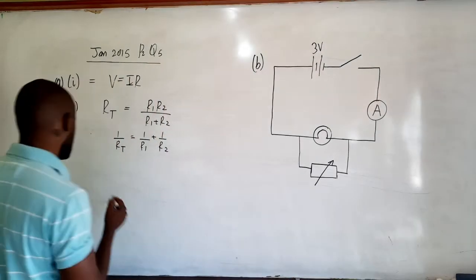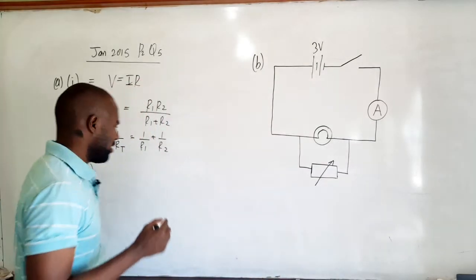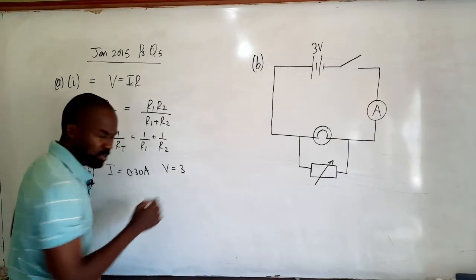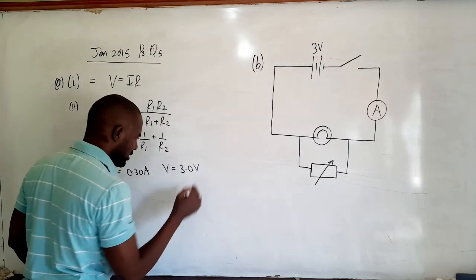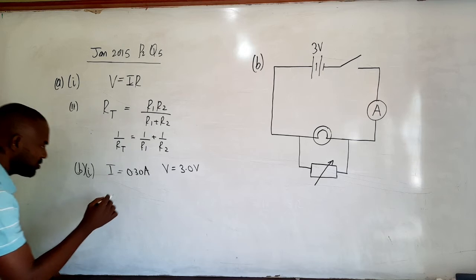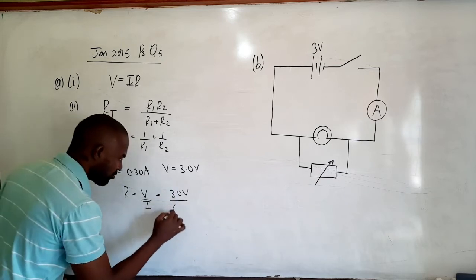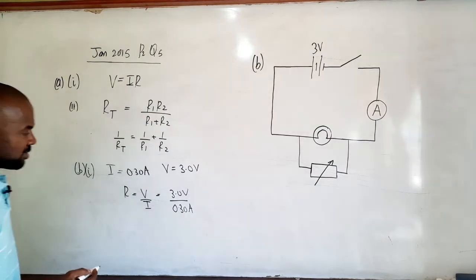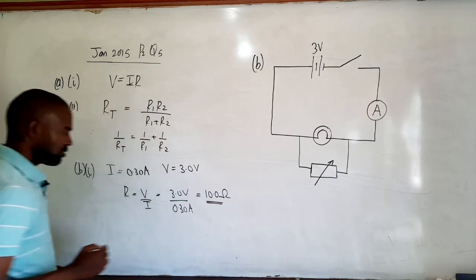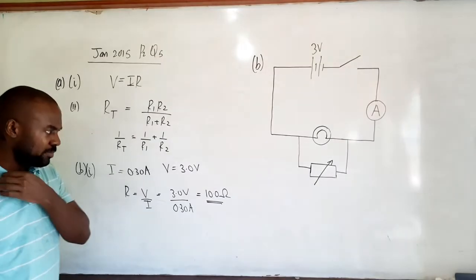Part B1 asks: what is the resistance of the bulb? For the bulb we have current I equals 0.30 amperes and PD V equals 3.0 volts. Using the transposed formula, R equals V over I, that gives us 3.0 volts divided by 0.30 amperes, which gives us 10.0 ohms. So the resistance of the bulb is 10.0 ohms.